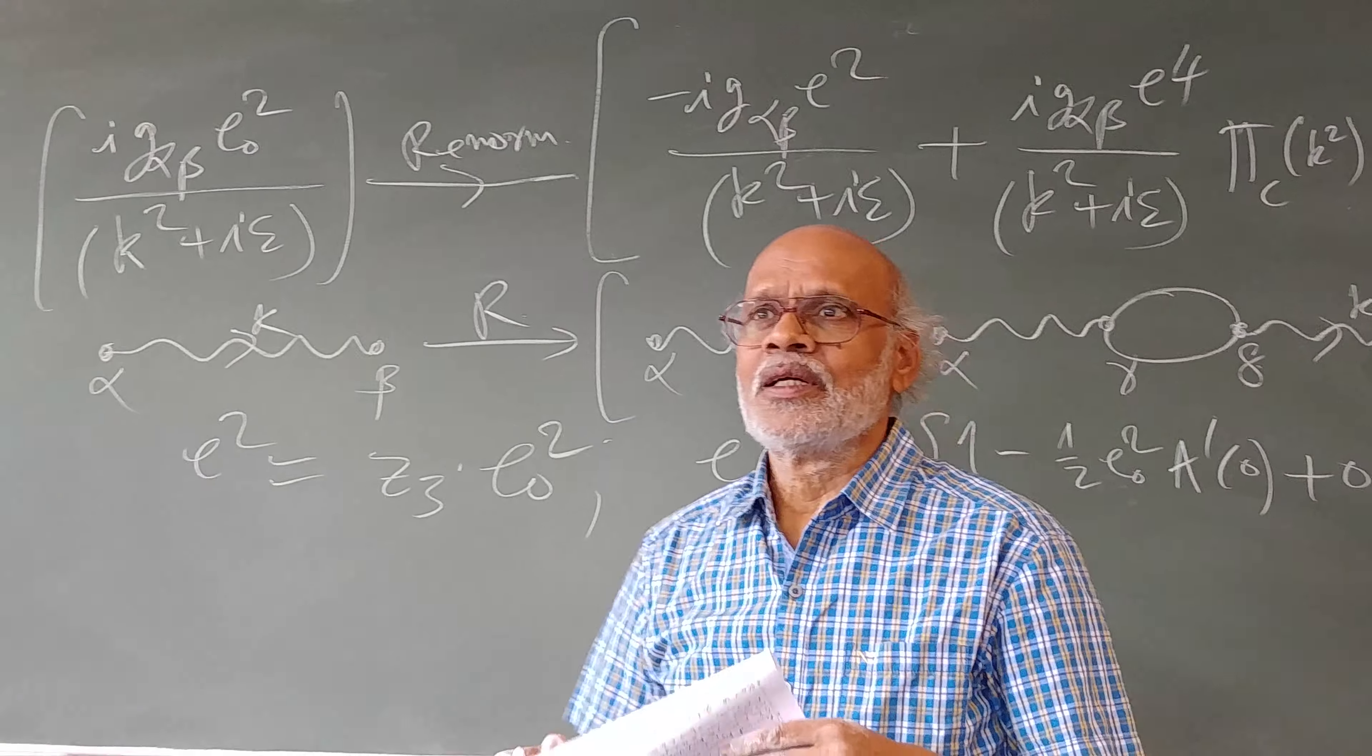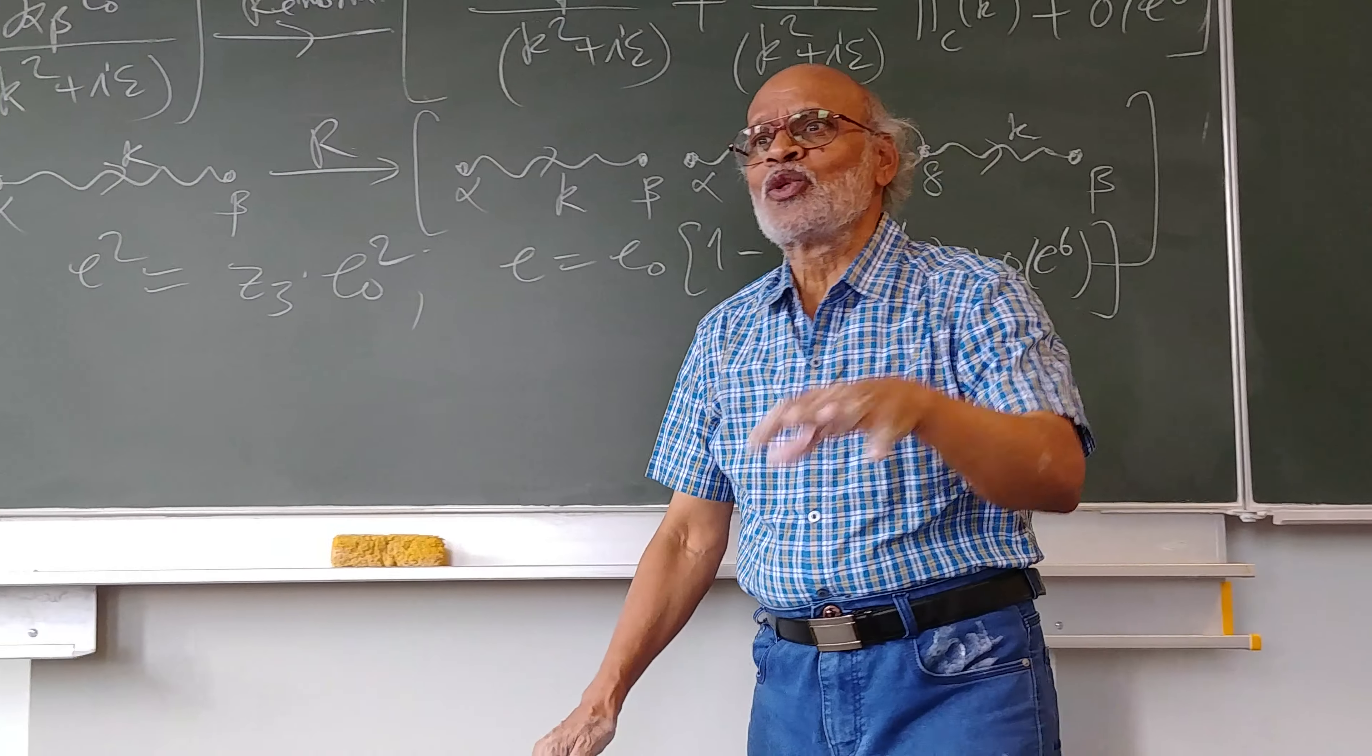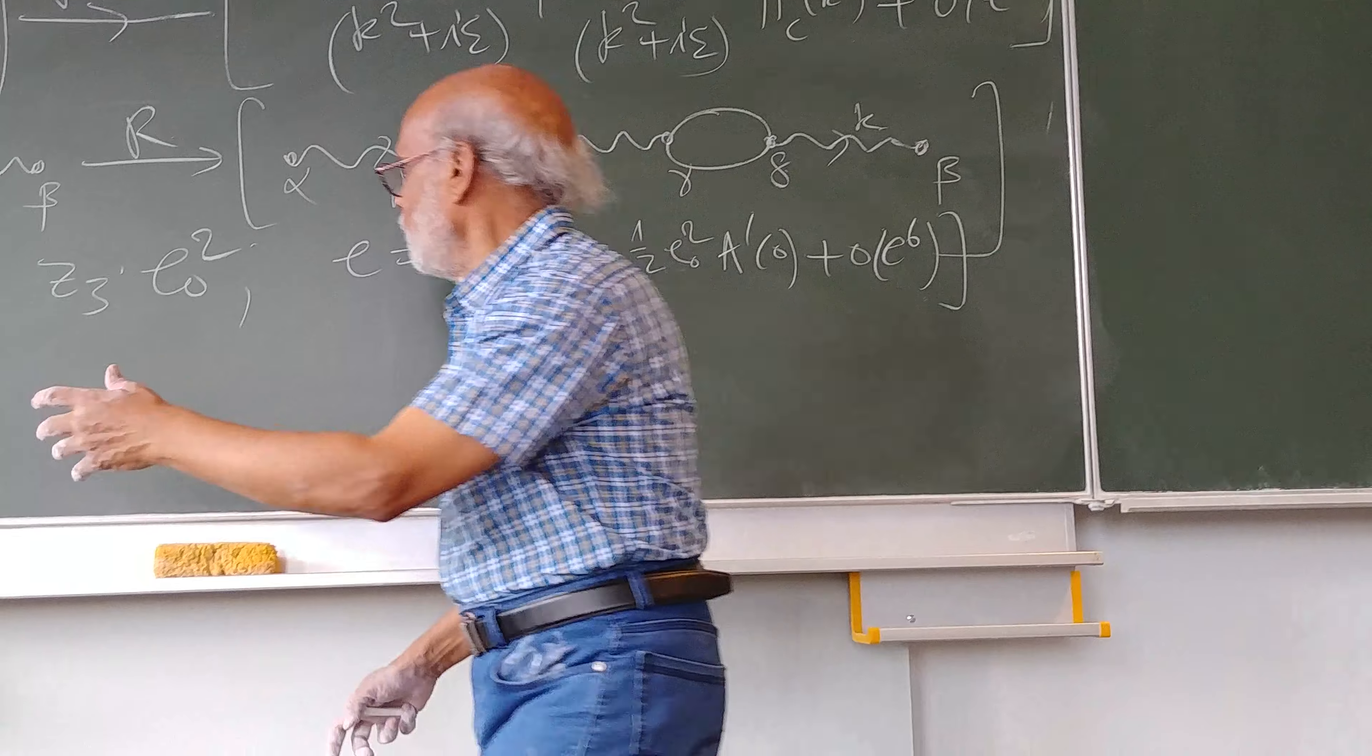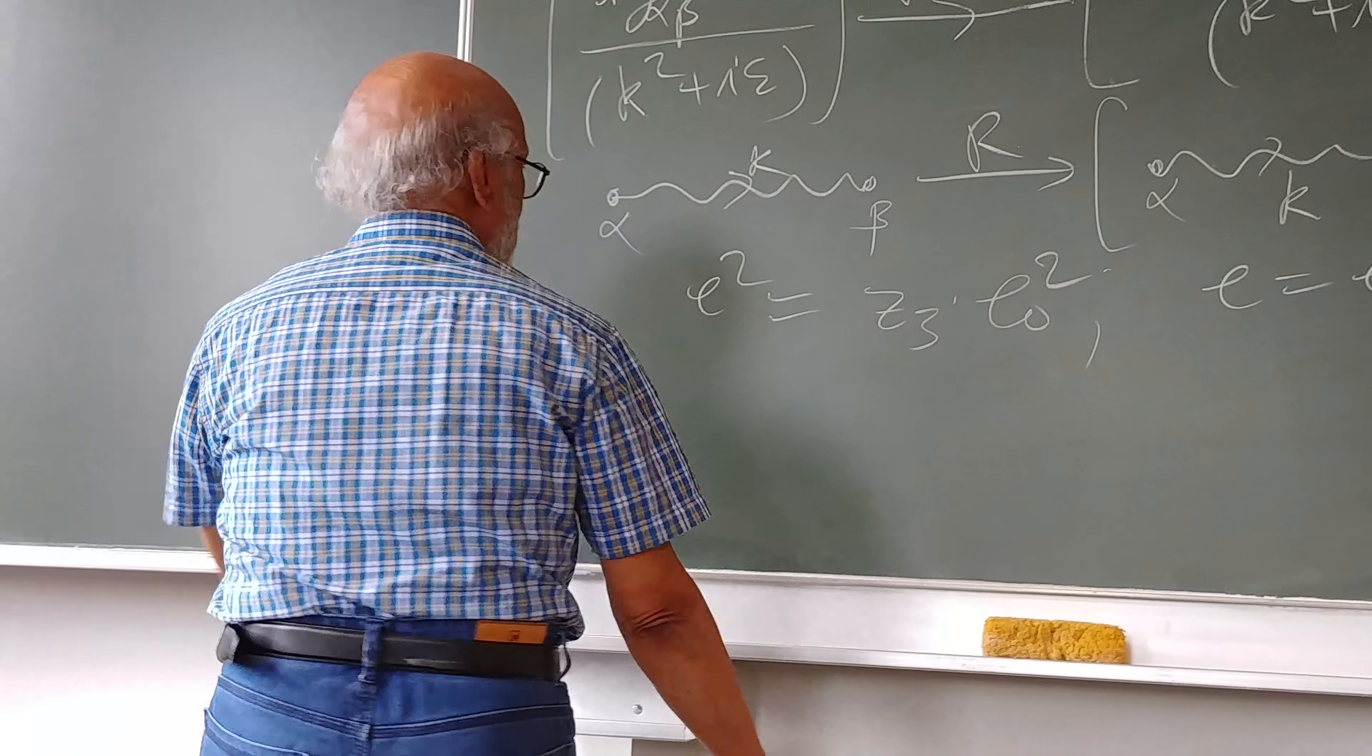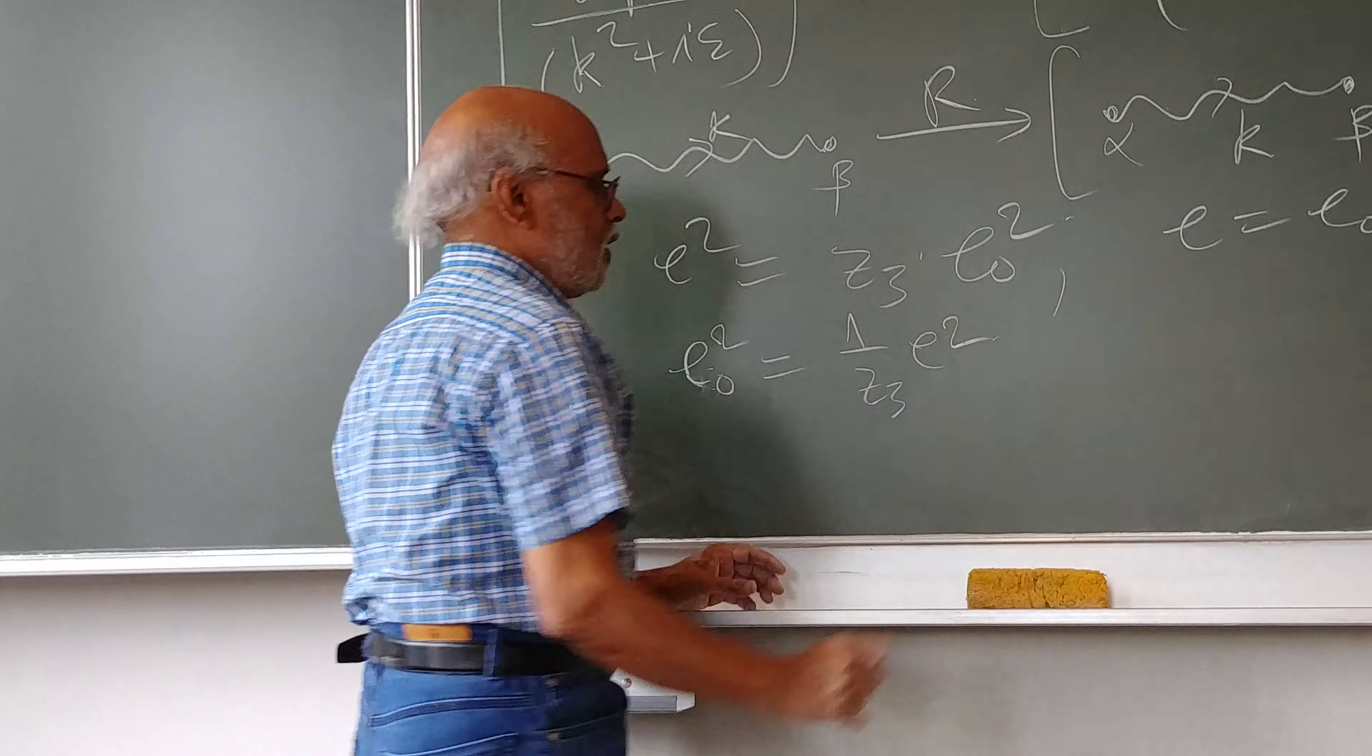If you are interested, my original source book is Mandel and Shaw. It's supposed to be the masterpiece book, almost everybody learns from there. This relation is important in the sense that here you relate the physical charge of an electron with the bare charge of an electron. You can invert it like e0 square would be 1 by z3 e0 square.